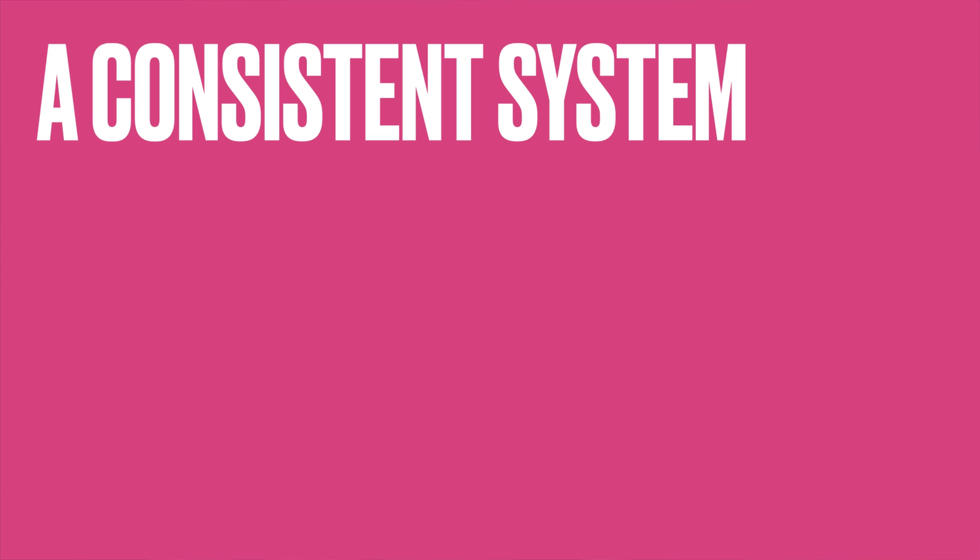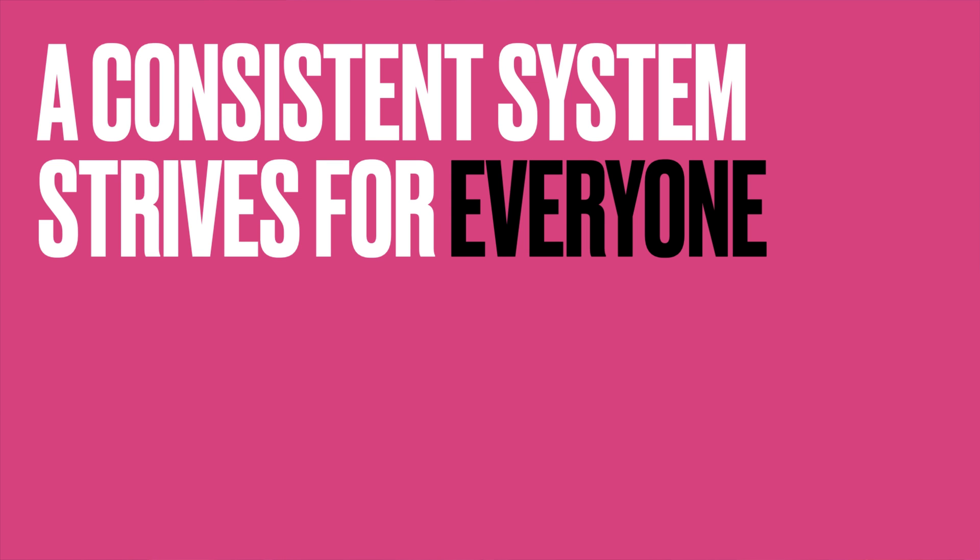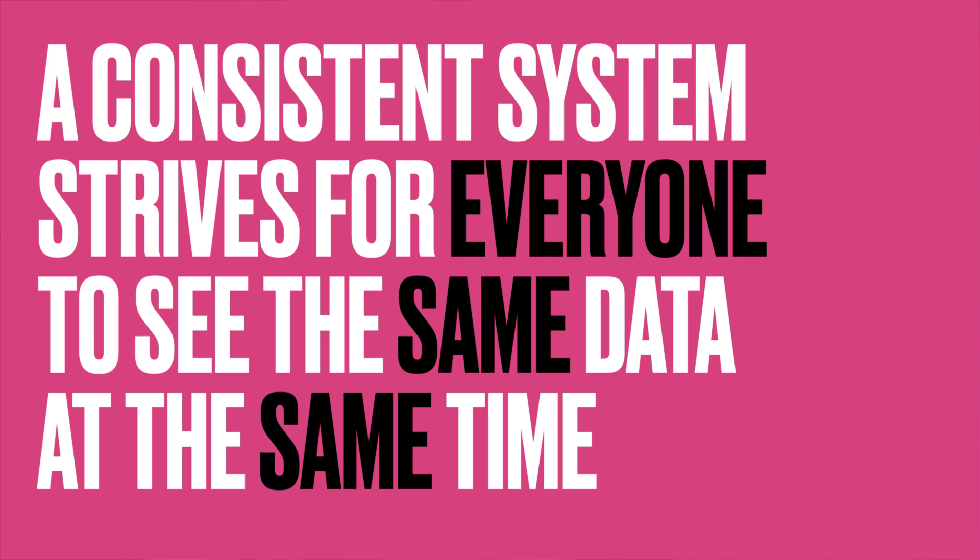Consistency in the context of distributed systems refers to the consistency of data across different nodes. In plain words, it means that a consistent system strives for everyone to see the same data at the same time. In more technical terms, it means that every read request to any one of your nodes should always return the most up-to-date value, and if it can't do that, it should return an error.